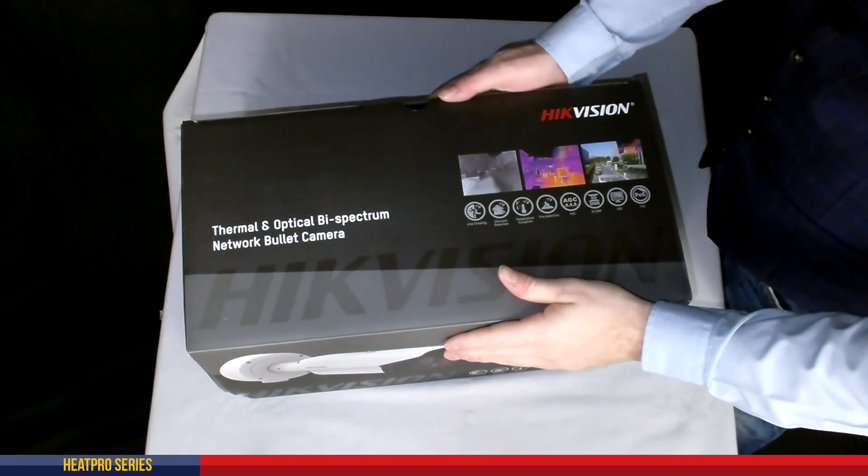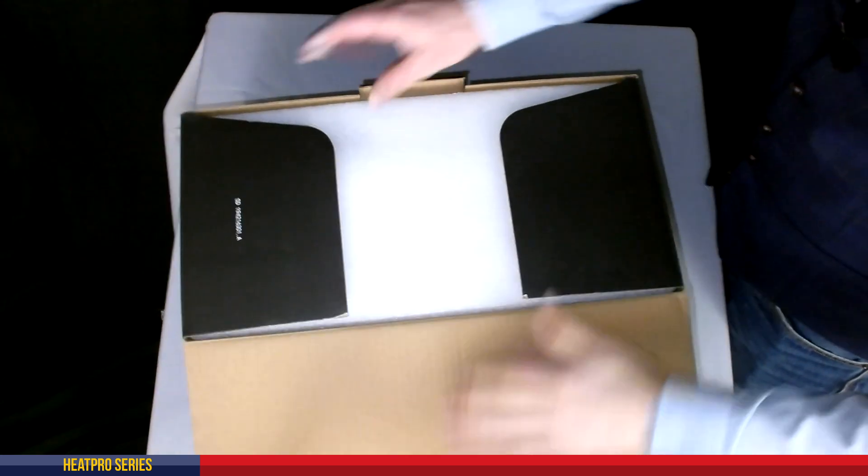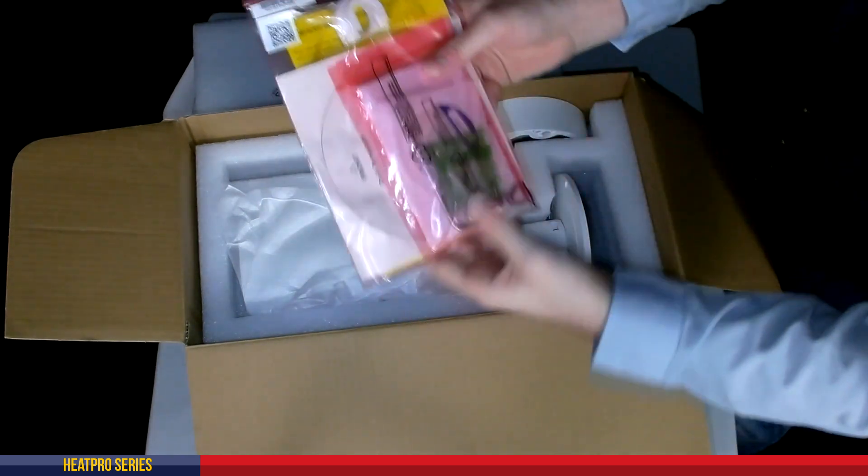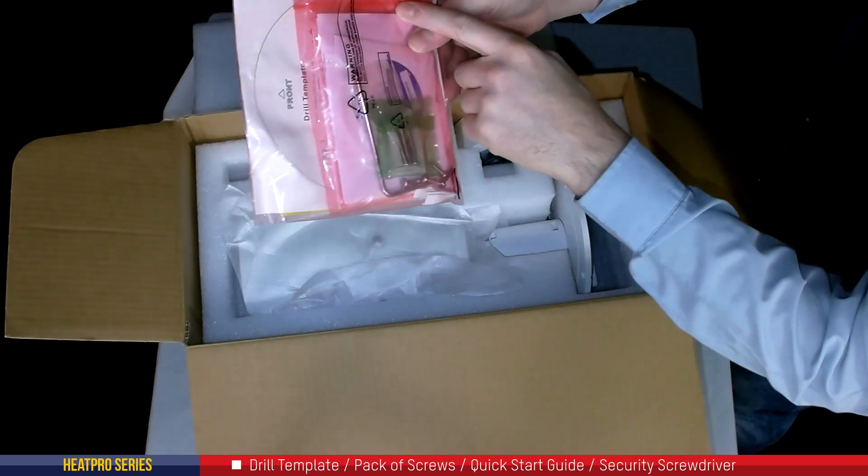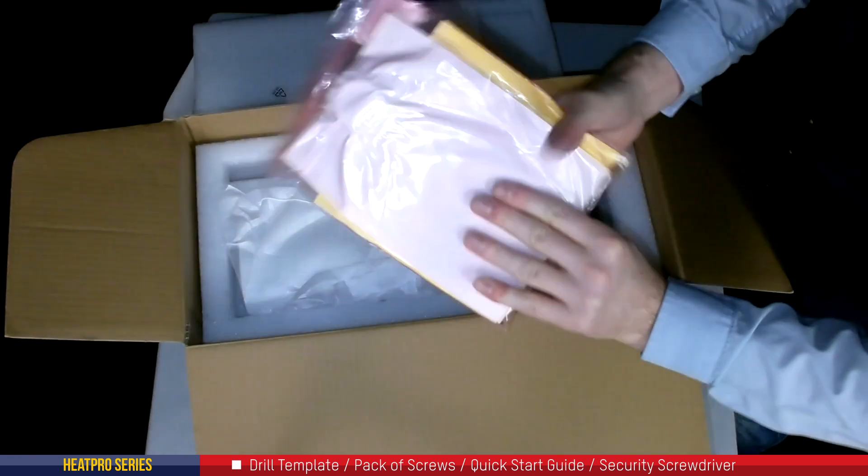Okay so here it is, so let's pop up the box and see what we get inside. So inside here we get the usual bag, it's got your drill template in there, your pack of screws, your little quick start guide and your security screwdriver in there for installation. So quite simple in there.